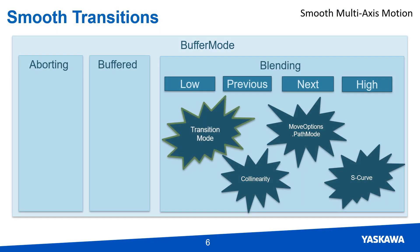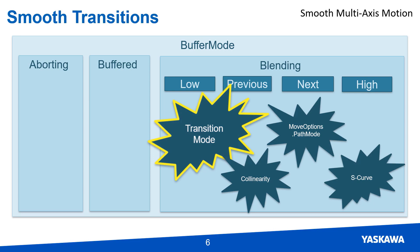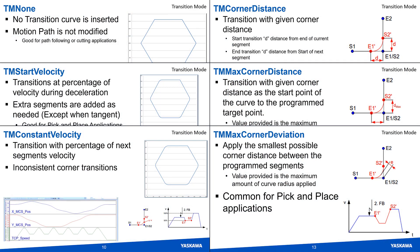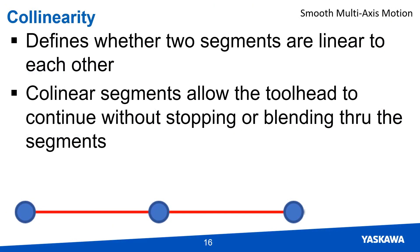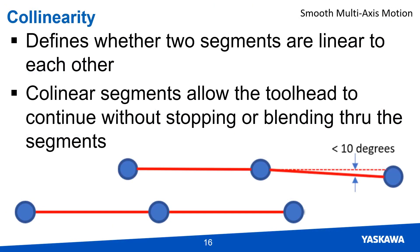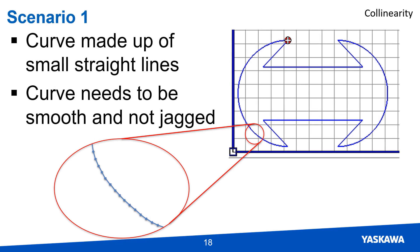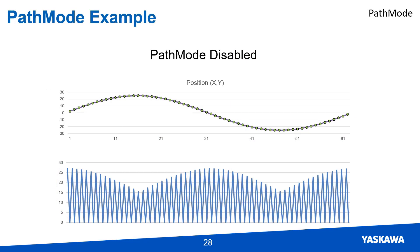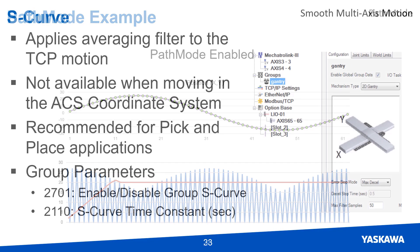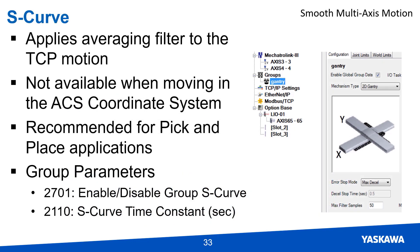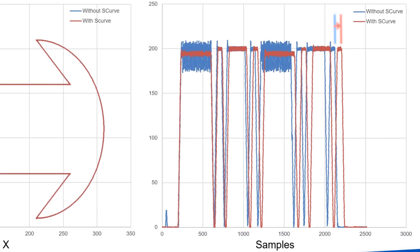Transition modes can be used to connect two move segments together to create one smooth motion, and a variety of transition modes are available for this purpose. Collinearity defines whether two segments are linear or not, allowing the controller in certain situations to smoothly transition between multiple microsegments. Path mode also creates smooth motion between microsegments by allowing the mechanism to accelerate and decelerate over multiple micromove segments. S-curve applies a filter to the controller position output which smooths out the velocity ripple when moving between non-collinear segments, and the end result is smooth mechanism motion delayed by the S-curve filter setting.